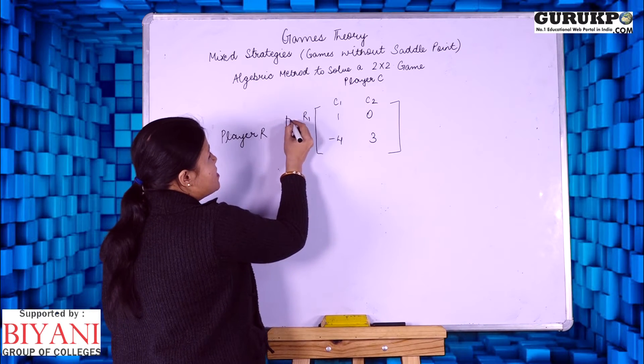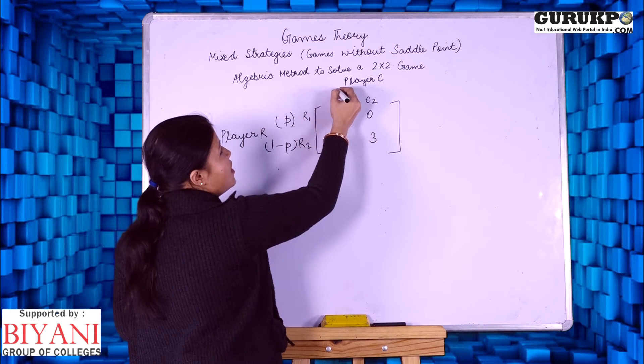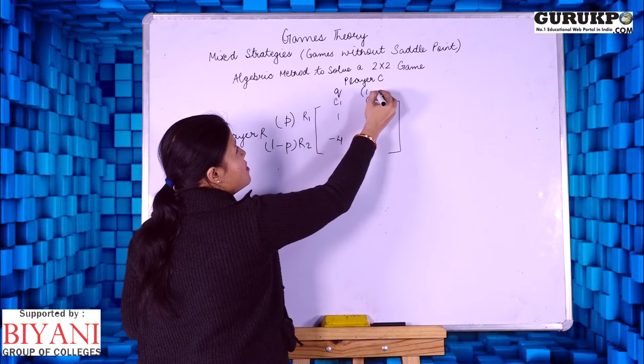We take it as P and 1 minus P for R player, and for C player, we take it as Q and 1 minus Q.